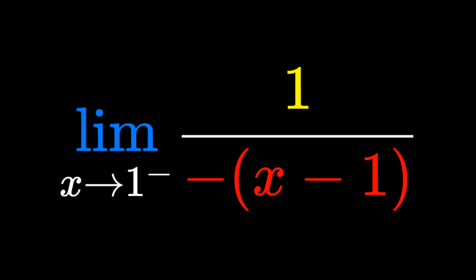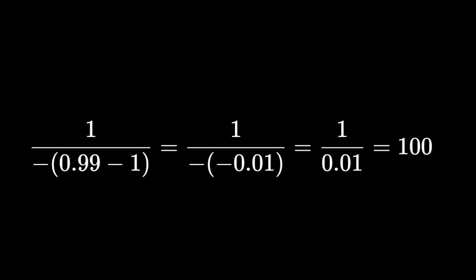We can now replace x with 0.99, giving us 1/-(0.99 - 1). This is then 1/-(-0.01), which gives us 1/0.01 = 100.